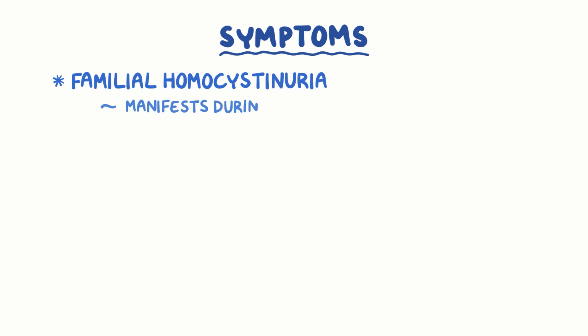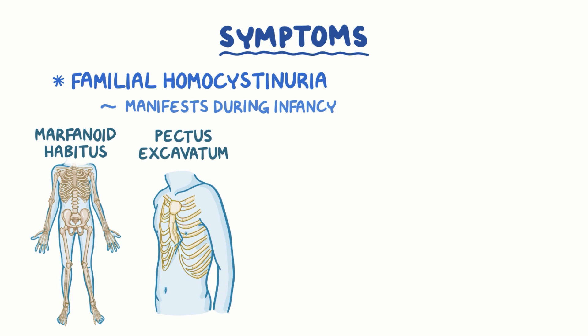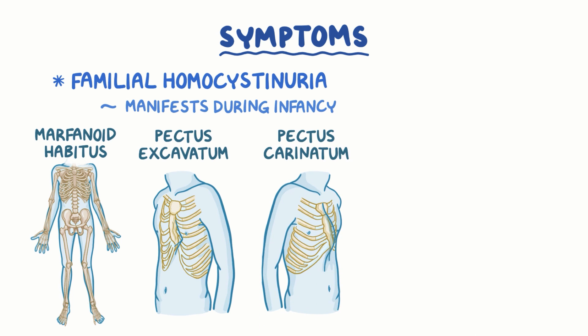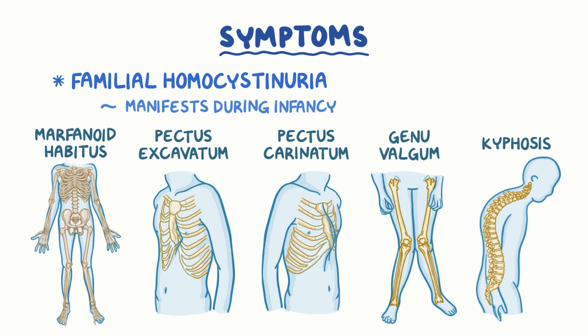Symptoms of familial homocysteinuria can manifest during infancy since homocysteine disrupts the development of many organ systems. People with this disorder can have marfanoid habitus, where they are unusually tall and thin with long arms and legs. Other features include pectus excavatum (caved-in sternum), pectus carinatum (protruding sternum), genu valgum where the knees angle towards each other, and problems with the spine like kyphosis, or an abnormally convex spine.